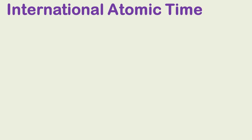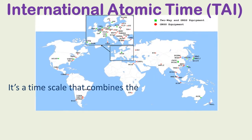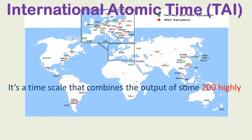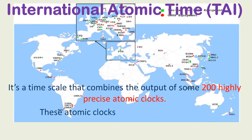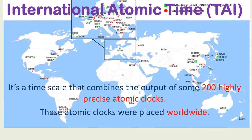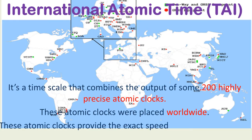International Atomic Time, TAI. It's a time scale that combines the output of some 200 highly precise atomic clocks placed worldwide. These atomic clocks provide the exact speed for our clocks to tick.